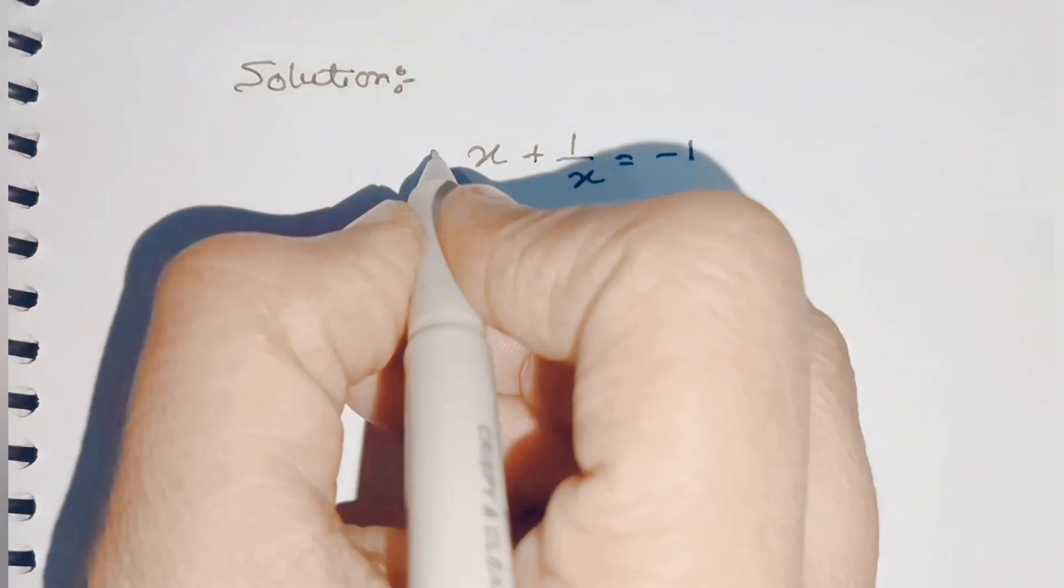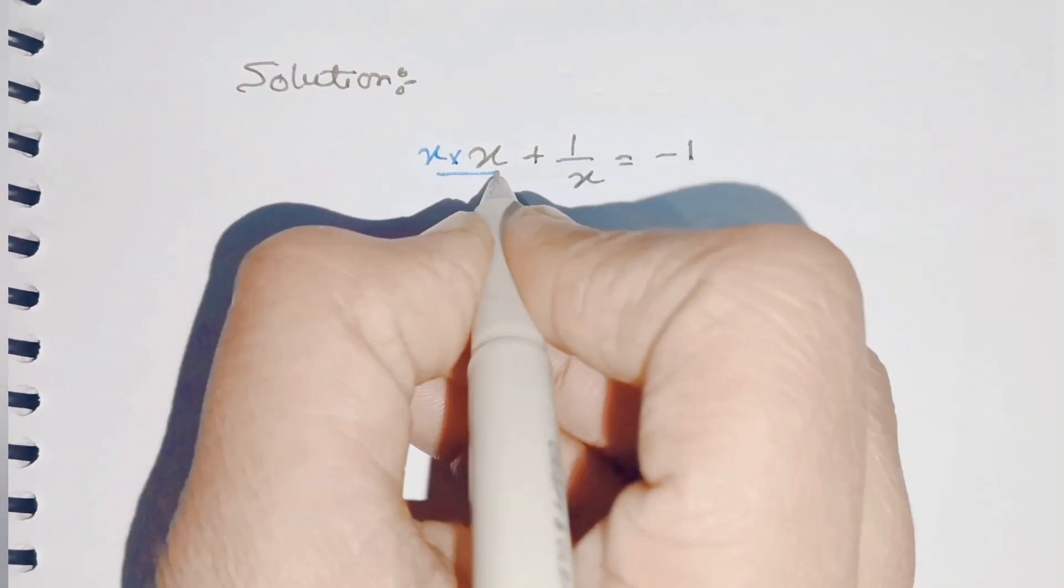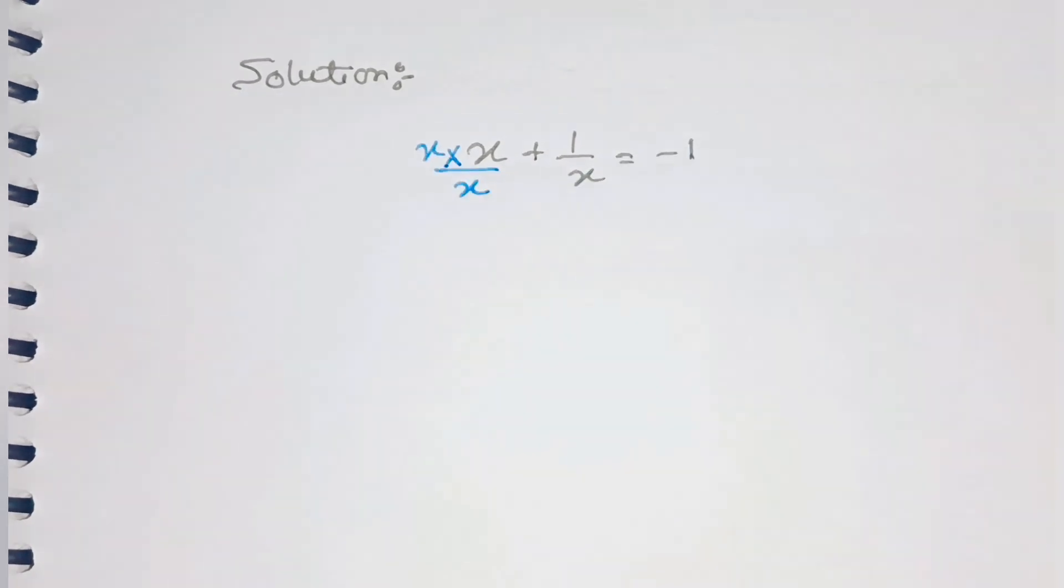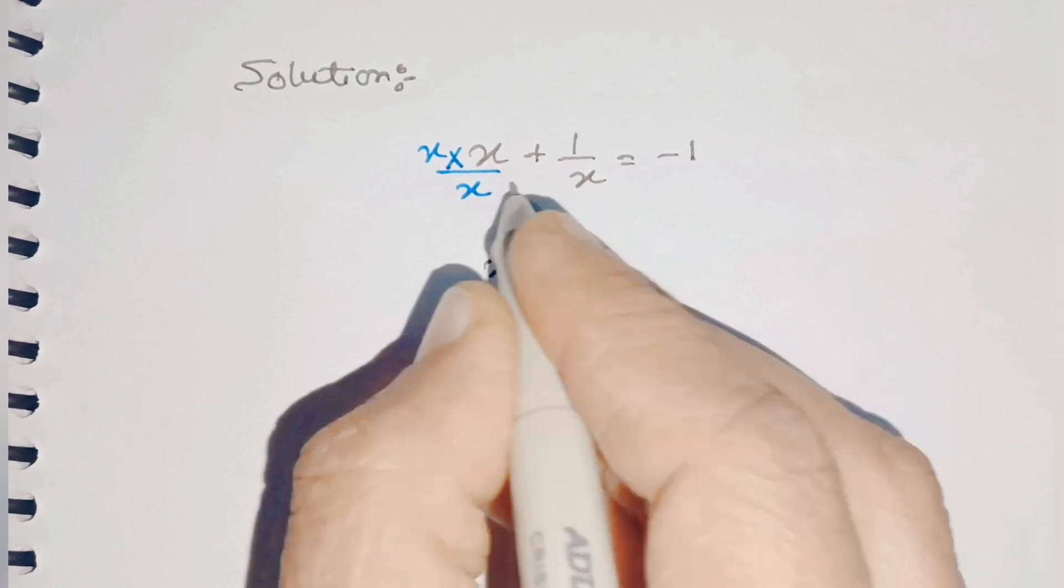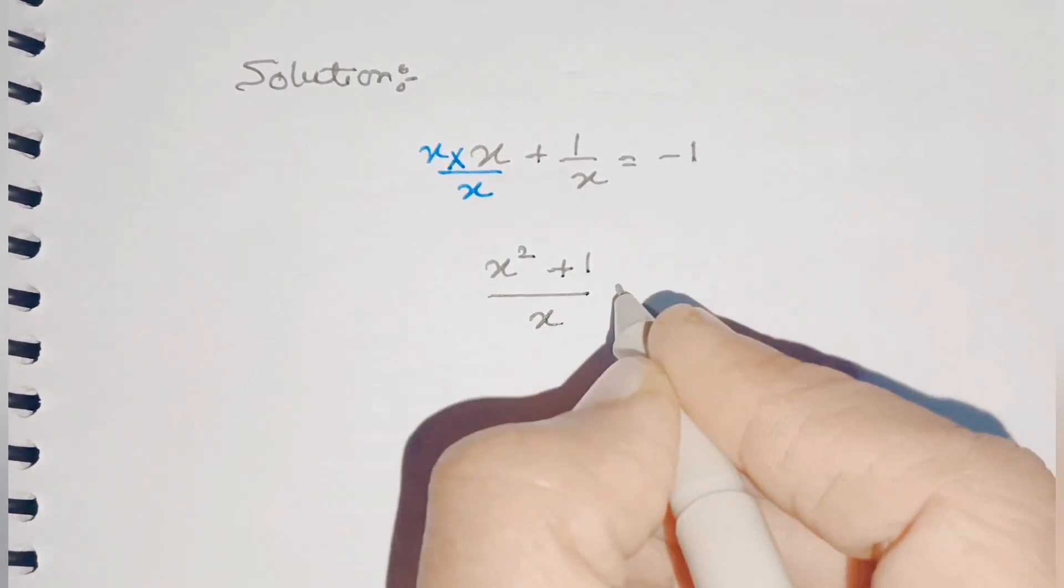To make the denominator equal, let's multiply and divide by x. So we'll get x times x is x² plus 1, divided by x, equals -1.